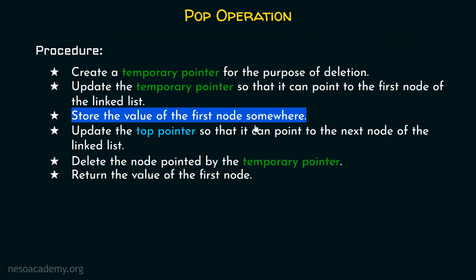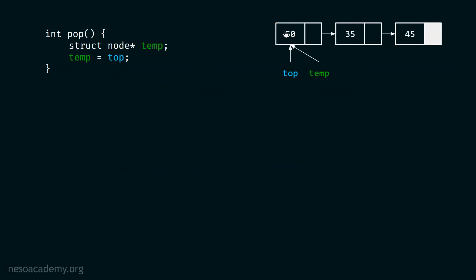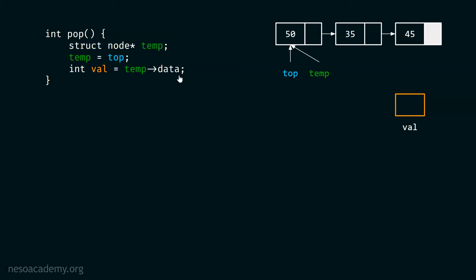After this, we must store the value of the first node somewhere. It is important to store this value before deleting the node. For this, we will use a variable called val. I have declared val here — it is the pictorial representation of val. I will assign temp->data to val. Temp->data is 50, and this is what we want to store. Therefore, we put 50 in val.